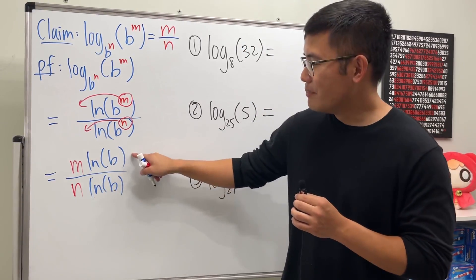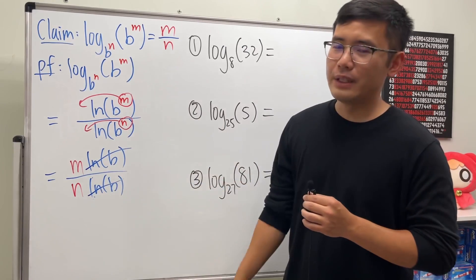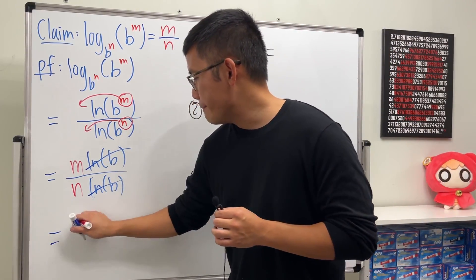And you see, ln(b) and ln(b) of course cancel, and finally we'll just end up with m over n.